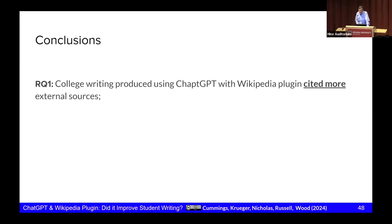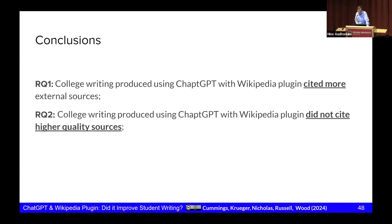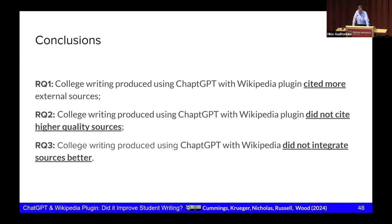Conclusions: students who used ChatGPT with Wikipedia plugin did cite more external sources. The quality of those sources was a wash — they were not citing higher quality sources. And the writing they produced did not integrate sources better. My main interpretation is that we, as teachers of writing, have to do a better job of helping students use the sources that ChatGPT with Wikipedia plugin — or Wikipedia itself — gives them. These tools are giving students greater access to more sources, the quality doesn't seem to be different, but we really haven't figured out how to help them once they get those sources.